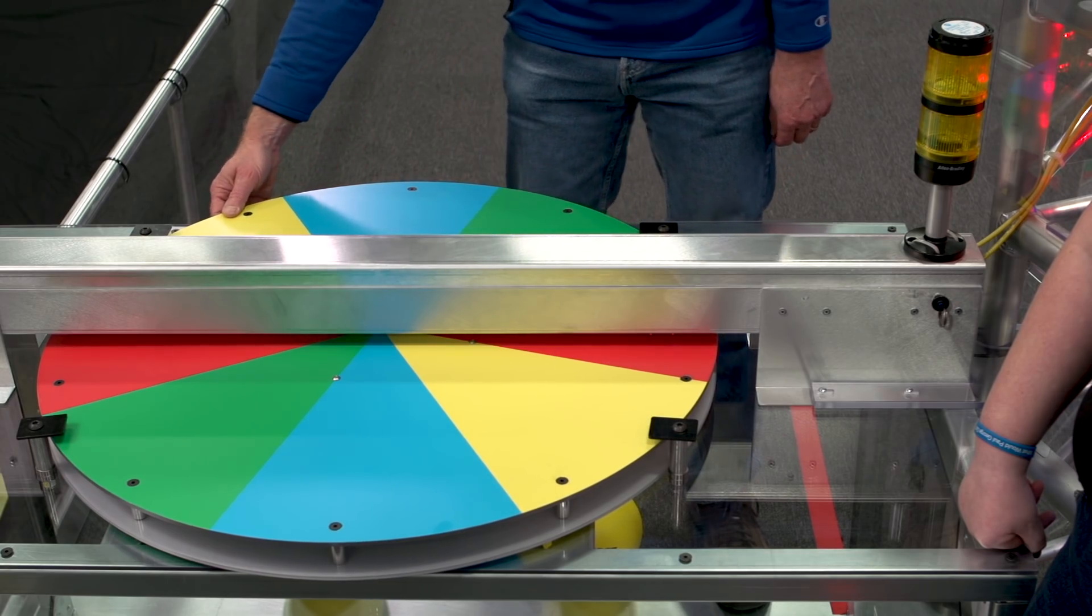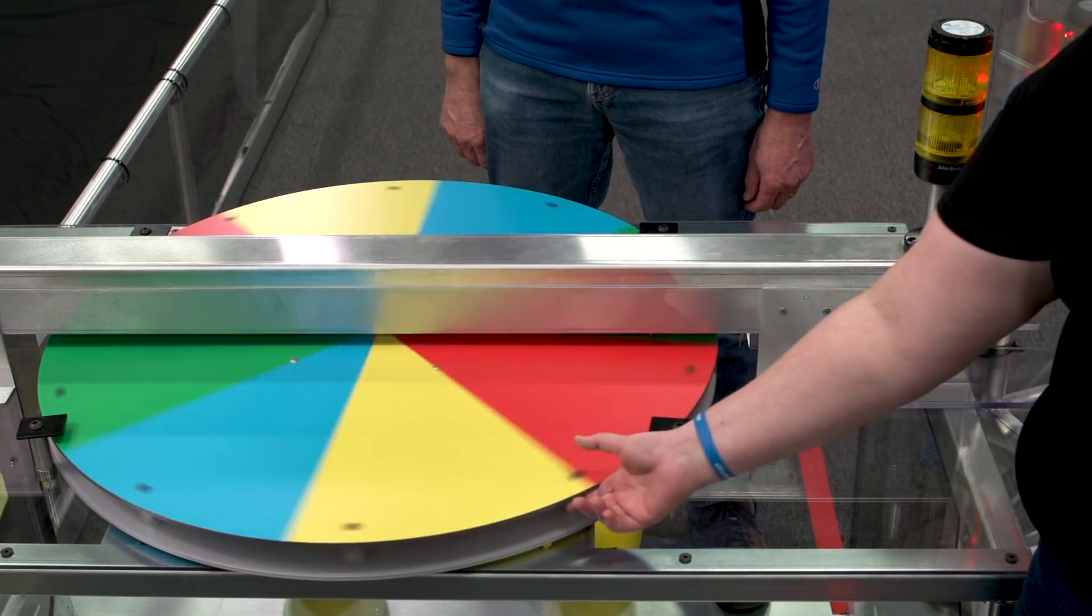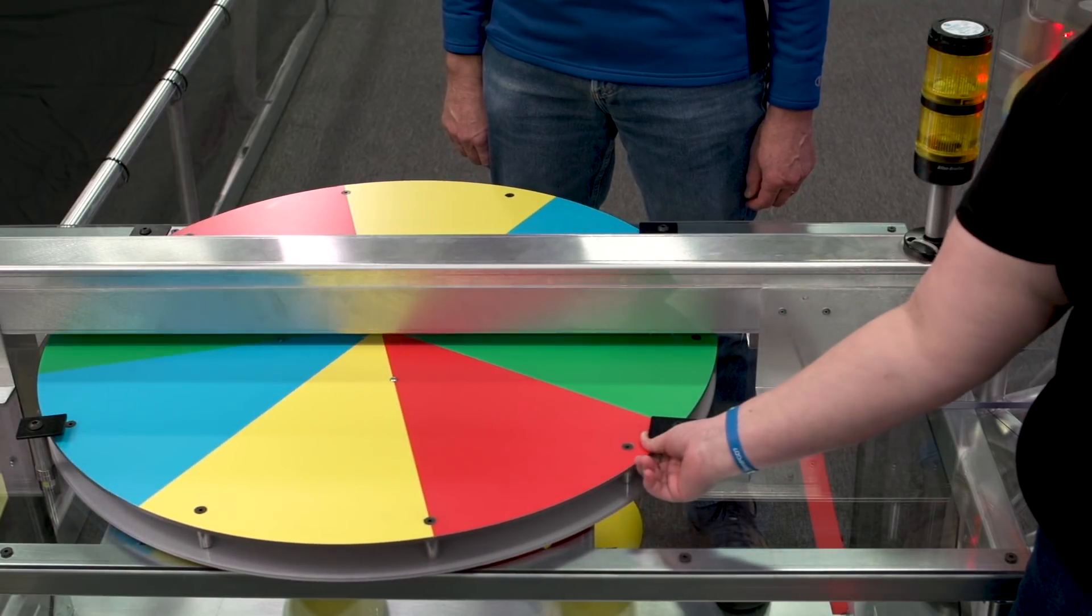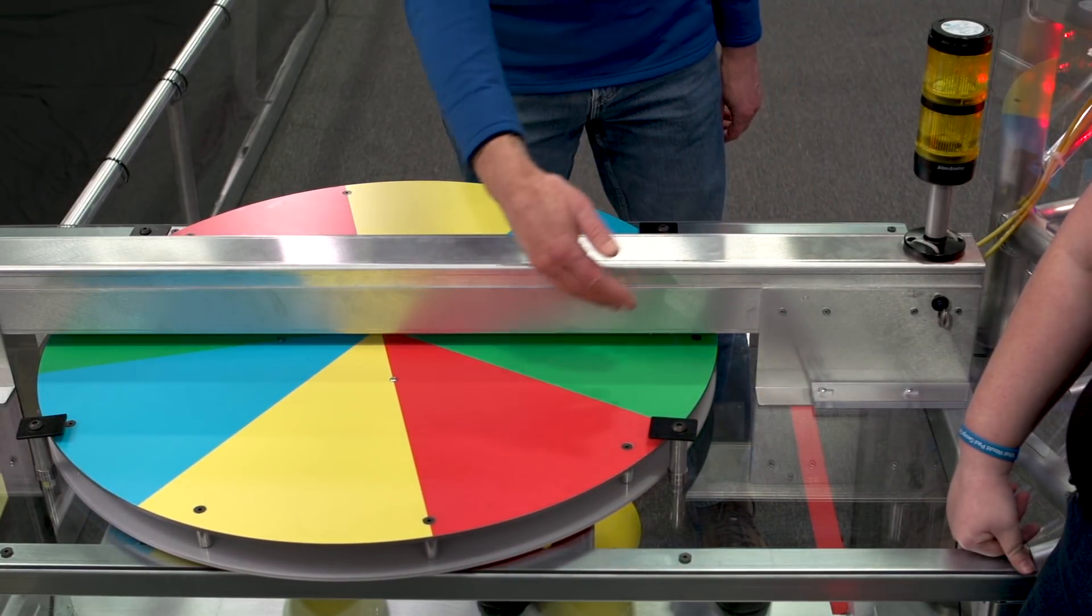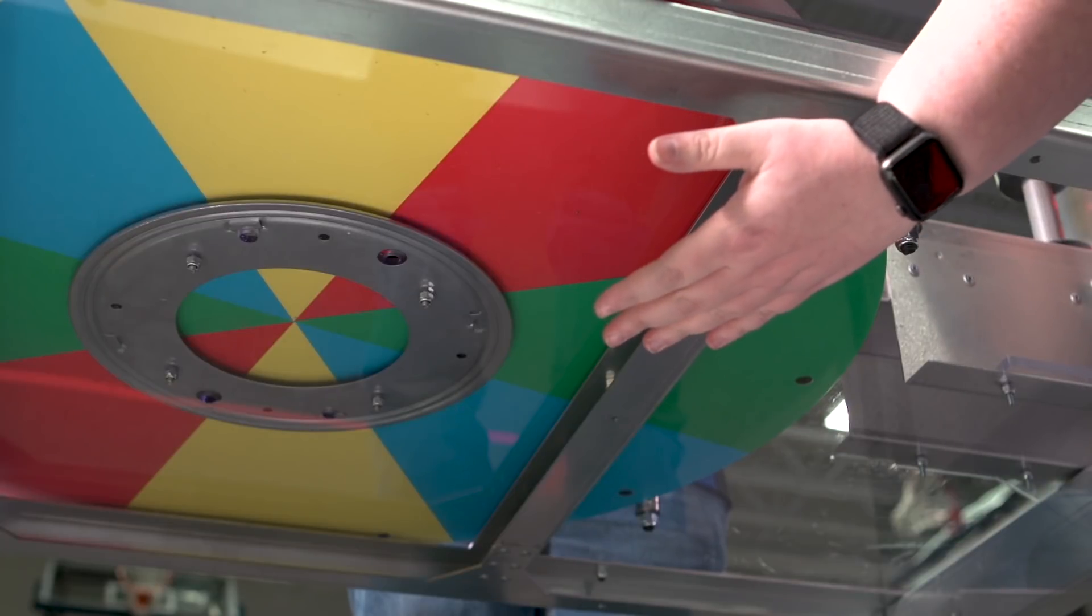The Control Panel has two tasks associated with it, rotation control and position control. Notice that the Control Panel has four distinct colors visible on top and bottom that are used to complete both tasks.